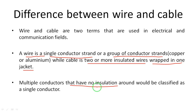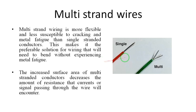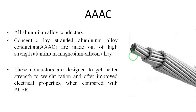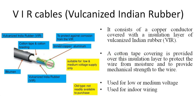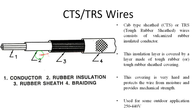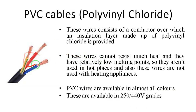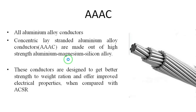Now let me show you the main difference between wire and cable. This is a single strand wire, and this is a multi-strand wire — a group of conductor strands — these are called wires. For cables, see here: there are three wires with insulation, and the combination of those three wires with insulation has an outer jacket, so it is called a cable. Conductors with separate insulation and a single outer insulation make up a cable.